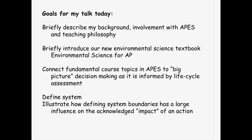I want to describe our new environmental science textbook, Environmental Science for AP, which is now at the end of its first cycle — a fair number of teachers and students have used the book, but only for this first year. And then I want to take some of the fundamental course topics in AP Environmental Science and connect them to big-picture decision-making as it is informed by life cycle assessment. We'll define a system and illustrate how defining system boundaries has a large influence on what you call the impact of an action — it really is a matter of how big you make your system, whether you include certain parts of the impact.